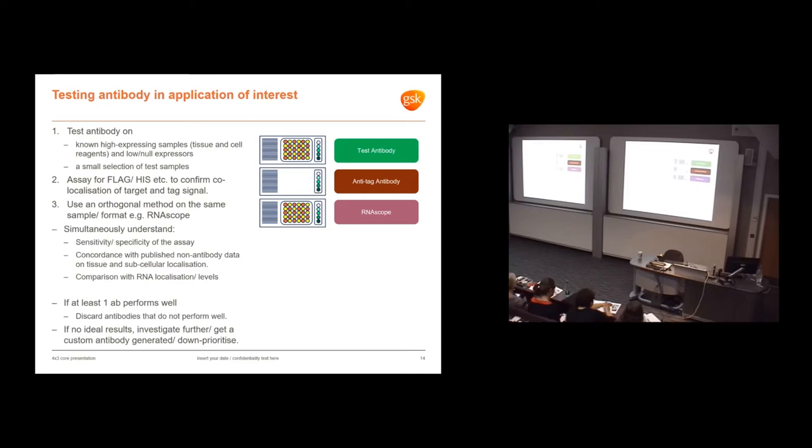Does the data correlate with published antibody data on tissue and sub-cellular localization? Does it allow us to compare RNA and protein levels and localization? If at least one antibody performs well, we discard all the others. If there's no ideal results, we either investigate further, get a custom antibody generated, or down-prioritize that target. We have so many targets that we don't need success in all of them to move forward.